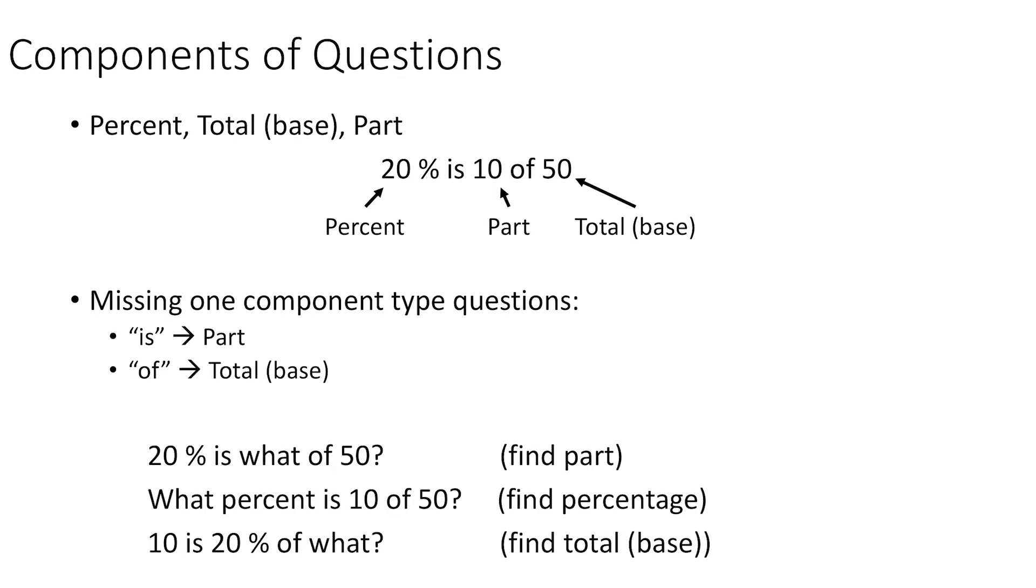Let's get a little more into the details of how we solve these problems. So let's look at some examples. If you had something that said 20% is what of 50, we have to isolate which is the part we don't know. 20%, so the percent is given, is what of 50.